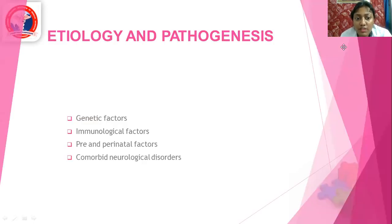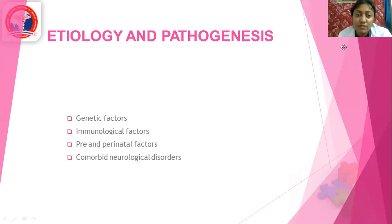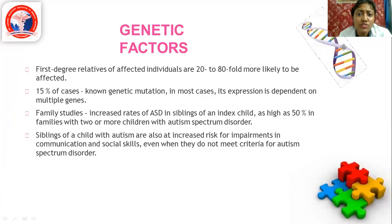For etiopathogenesis, the biopsychosocial approach is always considered, but here it is more genetic and biological. Since it is a developmental disorder starting at an earlier age, the biological contribution is more prominent. First-degree relatives of affected individuals are 20 to 80 fold more likely to be affected. Fifteen percent of cases have a known genetic mutation. Family studies show increased rates of ASD in siblings of an index child, as high as 50% in families with two or more affected children.